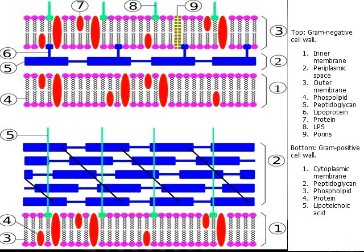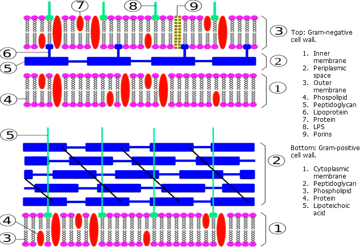Regardless of what type of bacteria you're dealing with, the foundational structure is the cell membrane — the innermost portion of the cell wall complex. It is a lipid bilayer similar in structure to the cell membrane of all other cells. It is the osmotic barrier between the cell and the environment and includes important functions such as electron and ion transport, energy production, acting as an insertion point for many different types of enzymes, and solute and cell product transport.